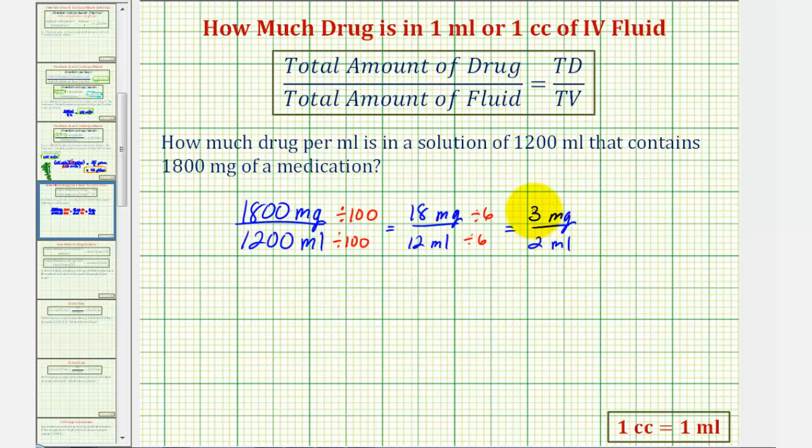From here we may recognize that three halves is equal to one and a half, therefore this would be 1.5 milligrams per milliliter.